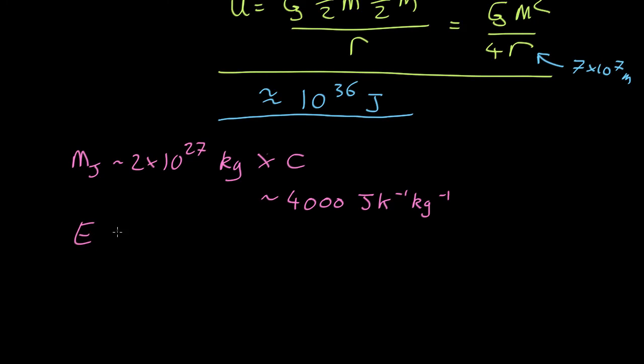To change the temperature by one degree is 4,000 times that. So a thousand is 10 to the 3. That means 10 to the 30, 2 times 4. So it's about, roughly, 10 to the 31 joules to raise the temperature by 1 kelvin.